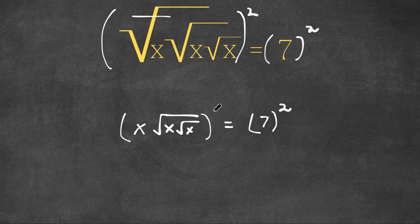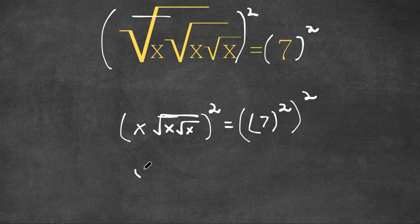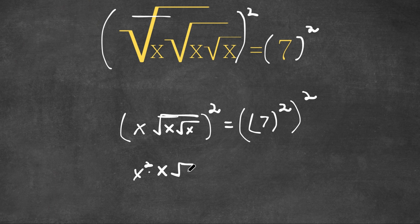Now I'm going to take the power of 2 again on both sides. This cancels out this square root, so now we have x squared times x times the square root of x. This is equal to 7 squared to the power of 2.